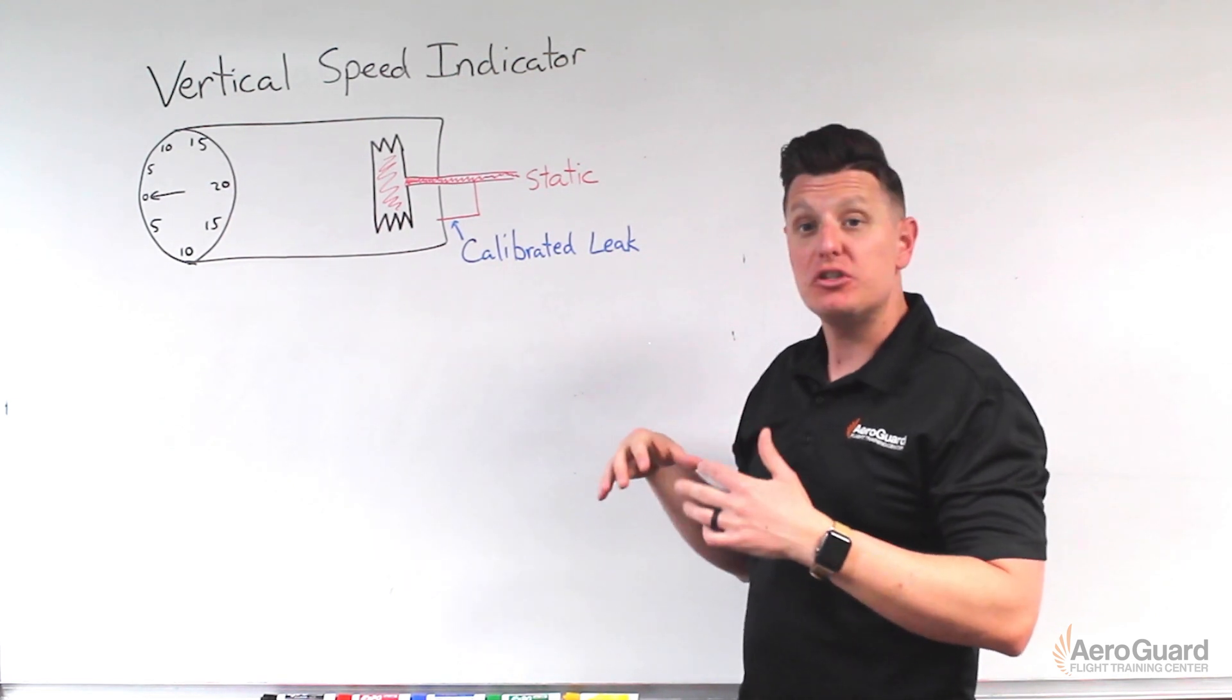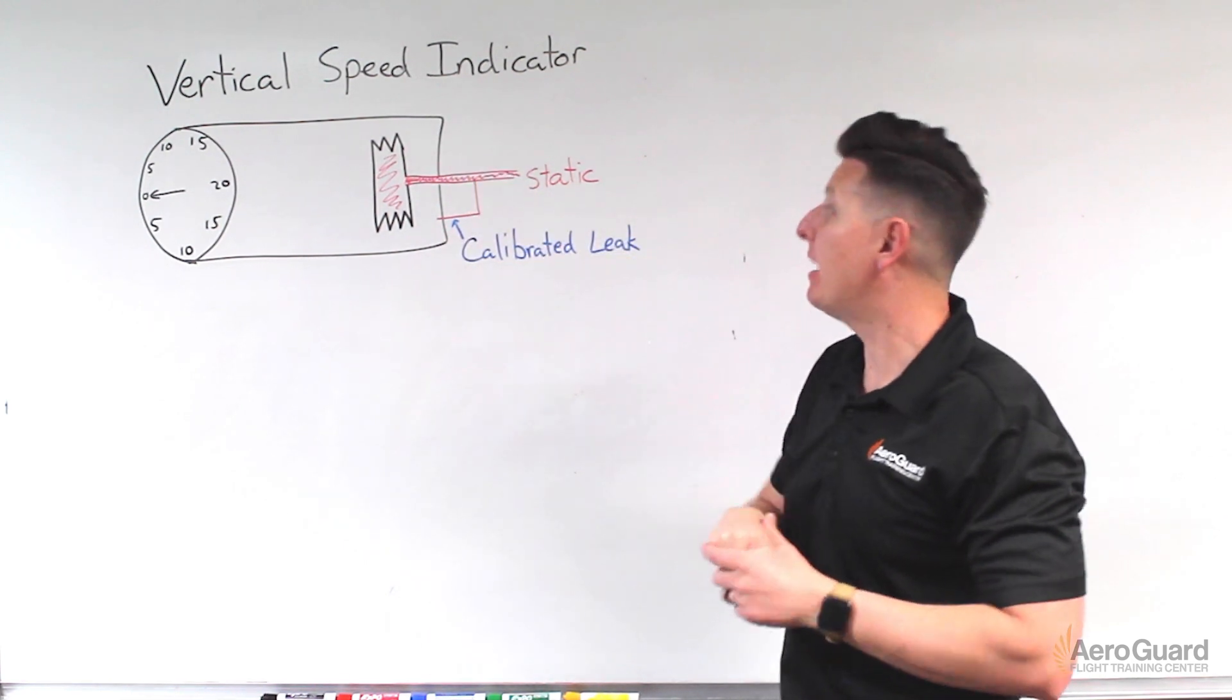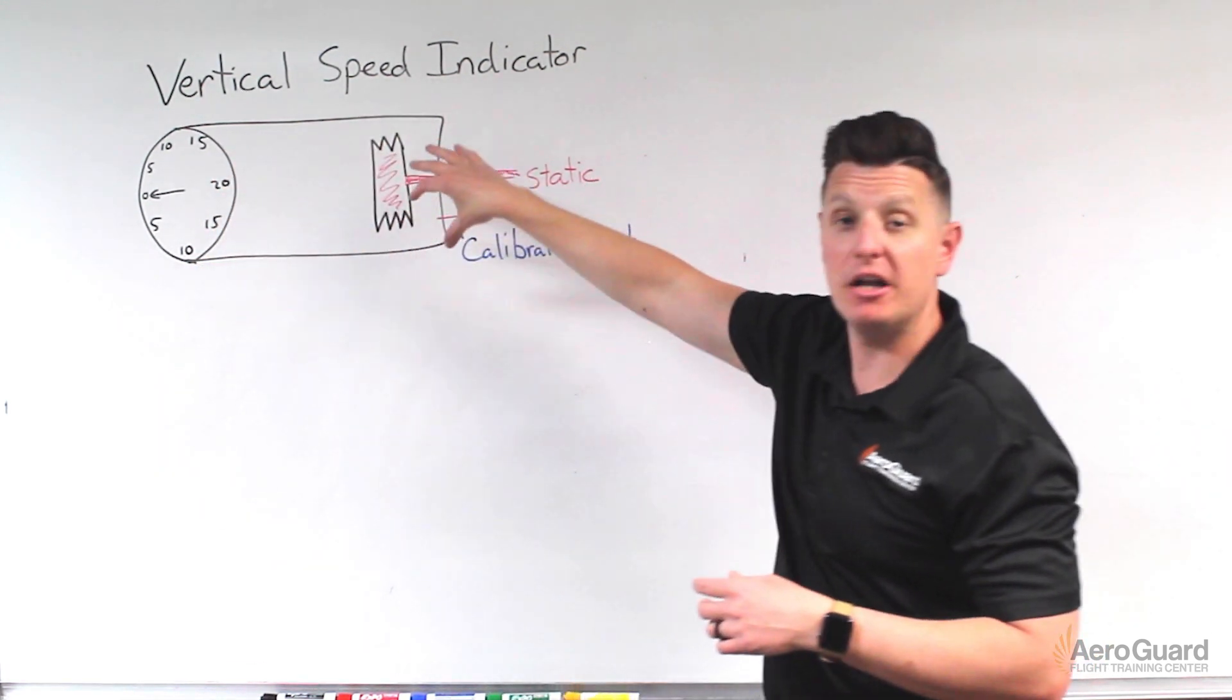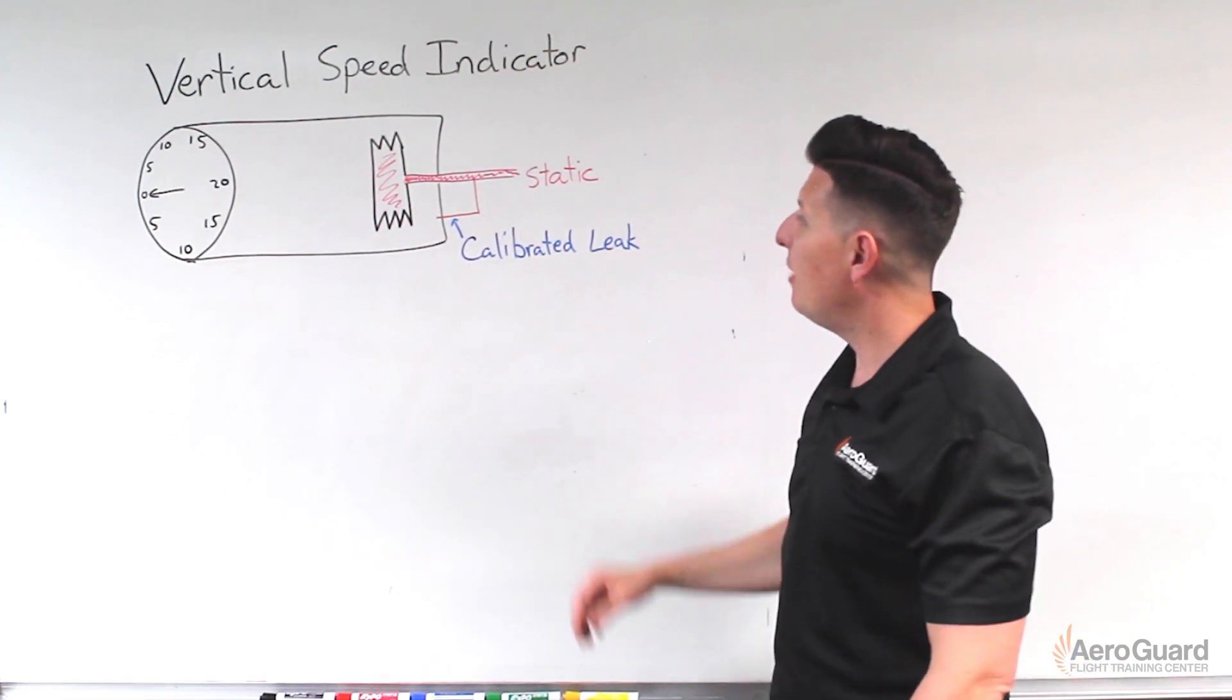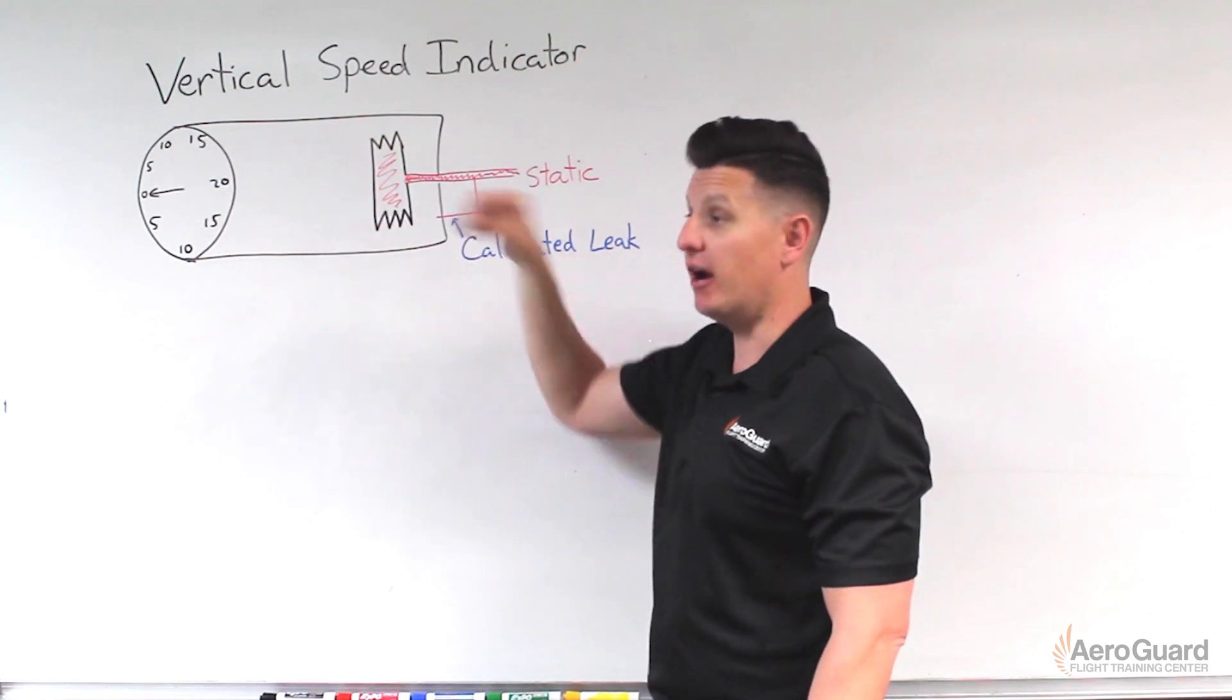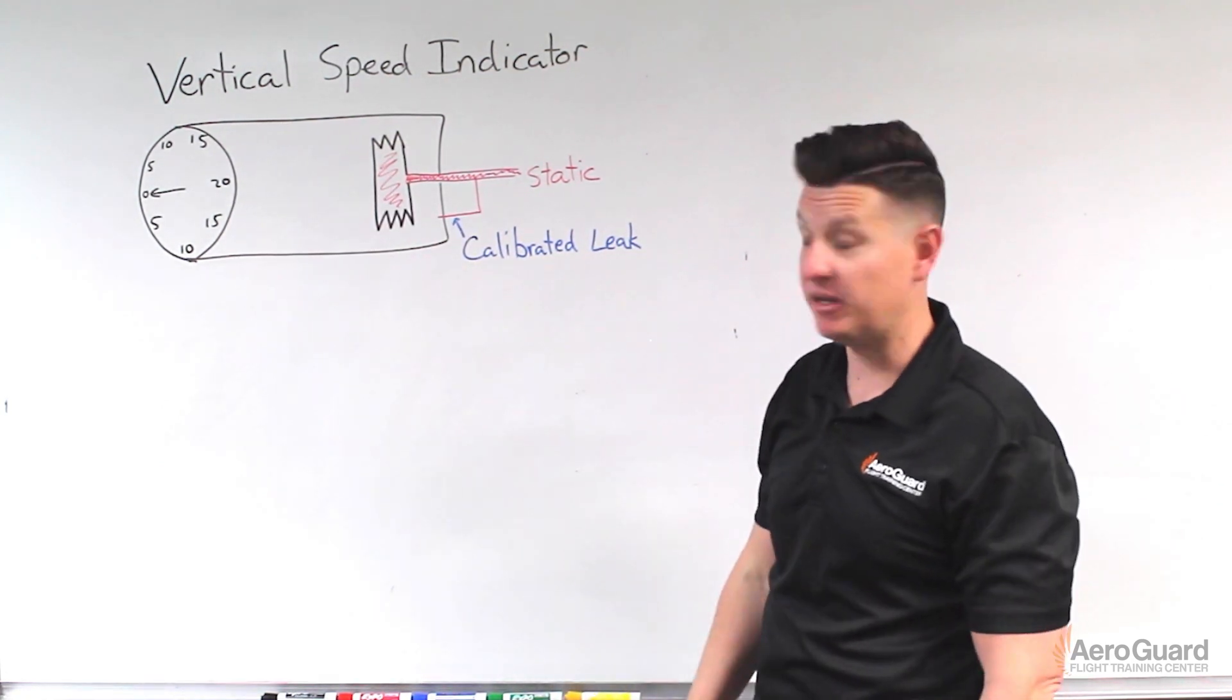So to get us started, what I wanted to do is look here to the back of the instrument, away from the face, but kind of what's going on in the guts inside. What we'll find inside of the sealed case is a diaphragm, similar to that of the airspeed indicator.